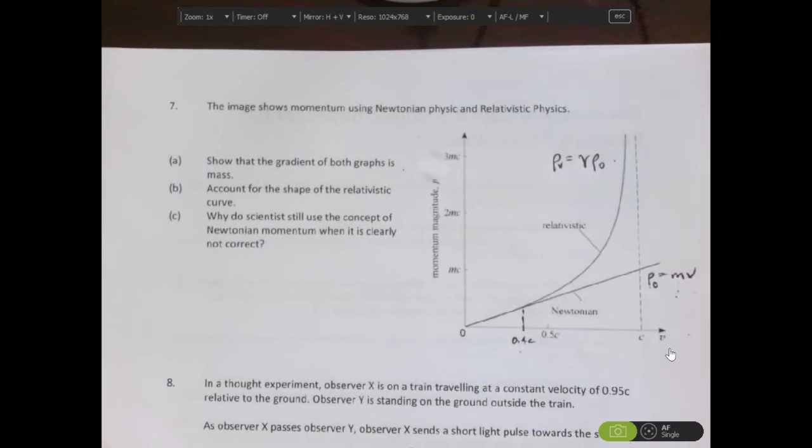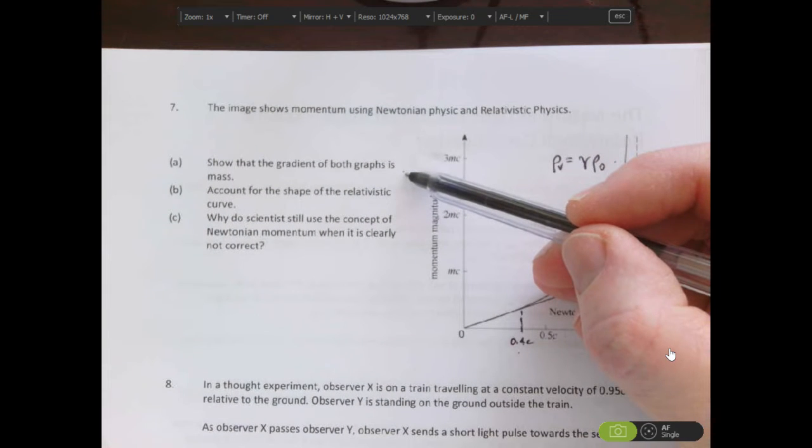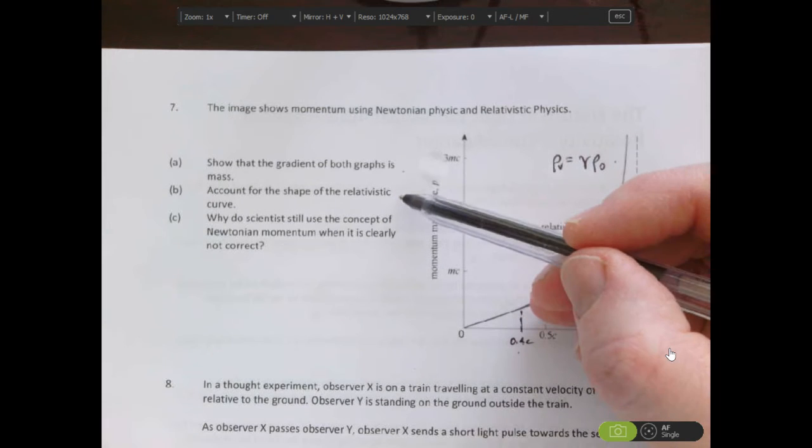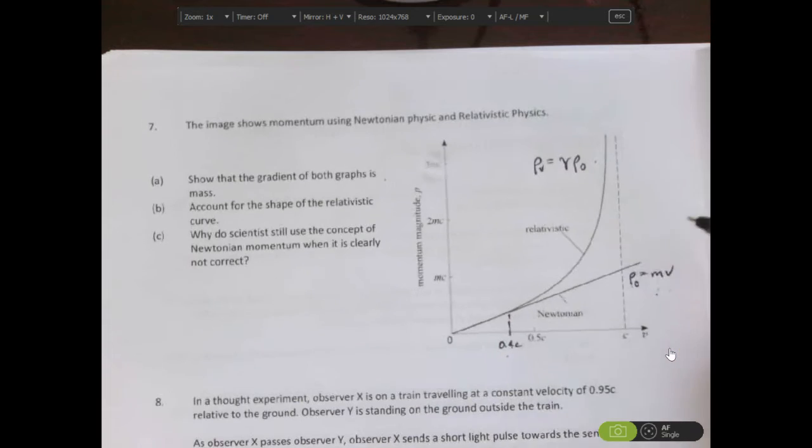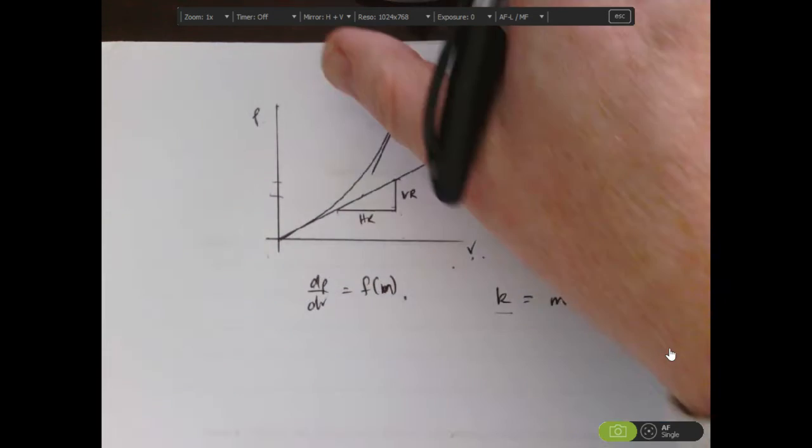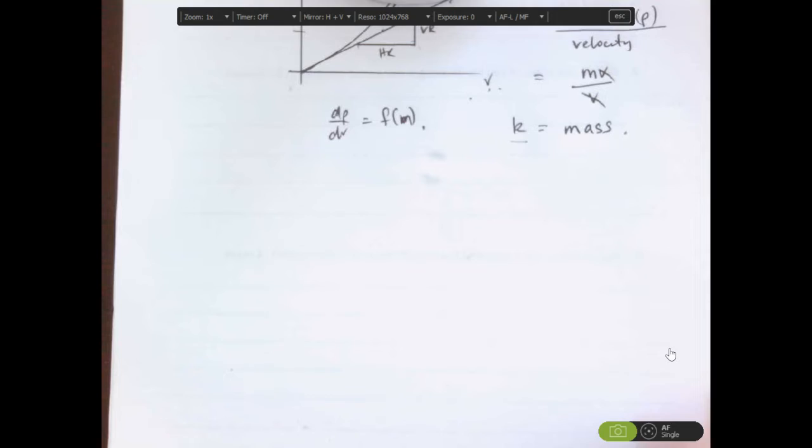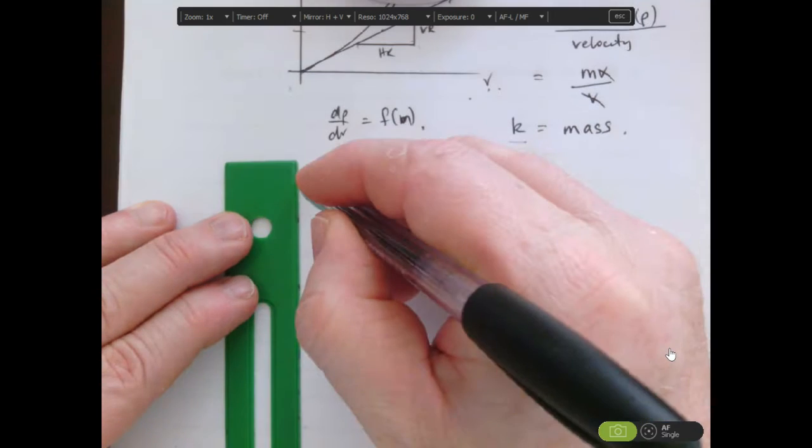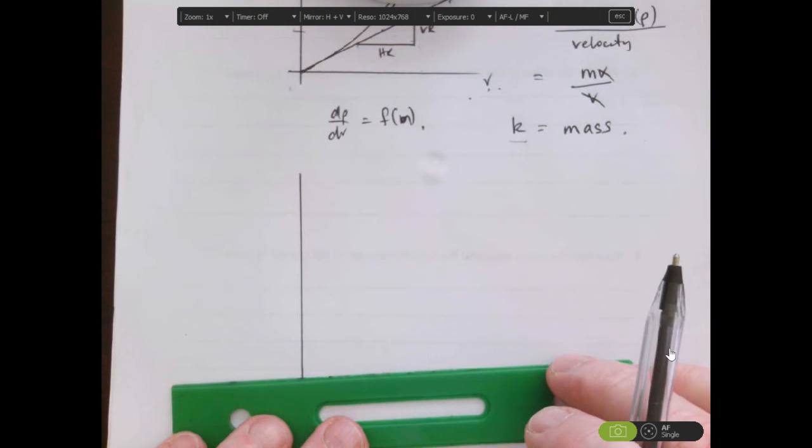So that's the first one we found: showing that the gradient of both graphs is mass. The second is account for the shape of the relativistic curve. Well, to account for the shape of the relativistic curve, we need to make sure that we identify the main fundamental feature of that curve. Well, there's two fundamental features of that curve.